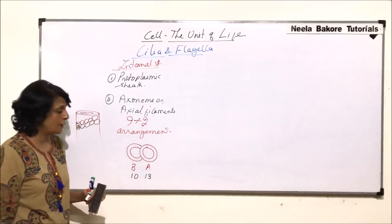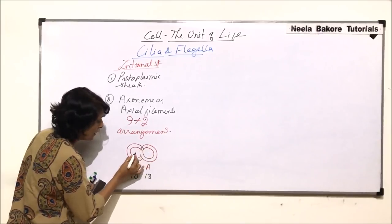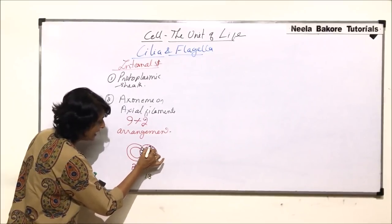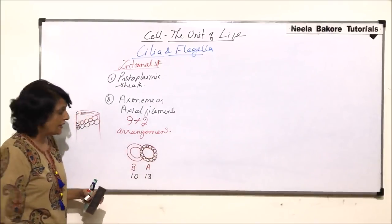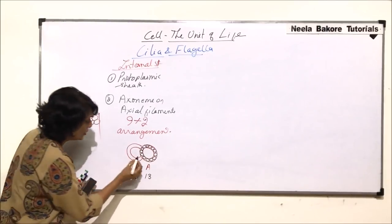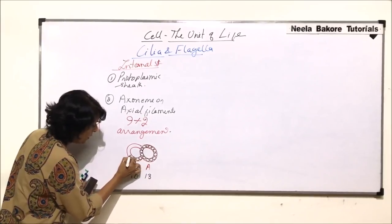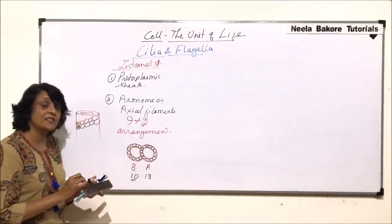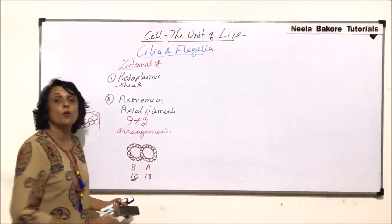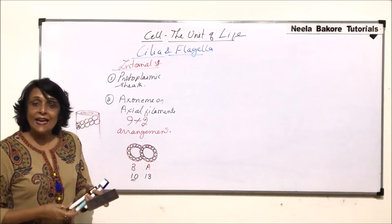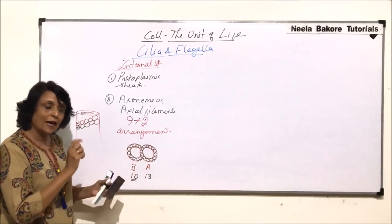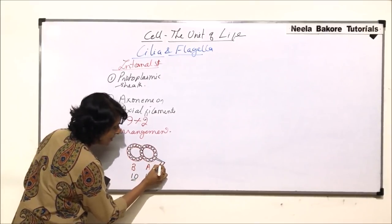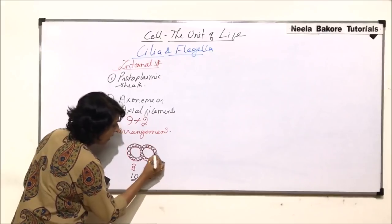The A tubule has 13 protofilaments while the B tubule has 10 protofilaments. Each microtubule of the doublet has two arms: the inner arm has a bent structure and the outer arm has a hook-like structure.